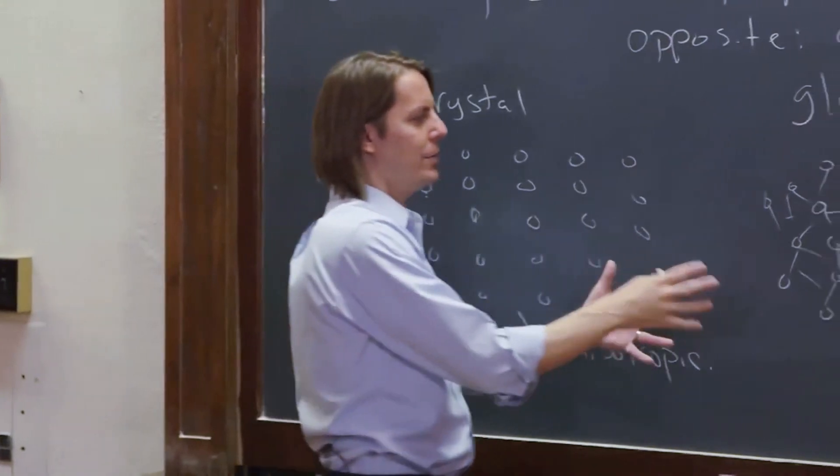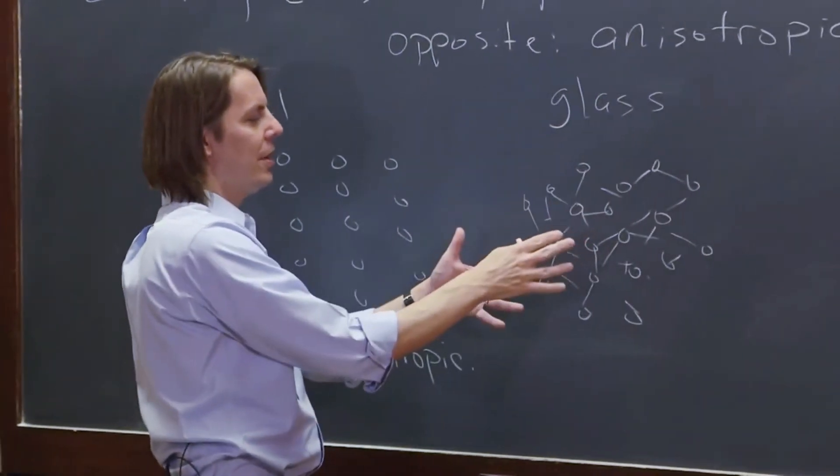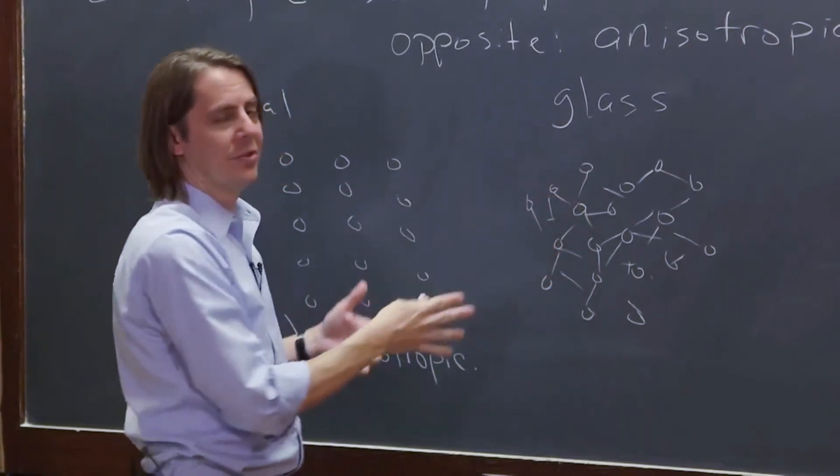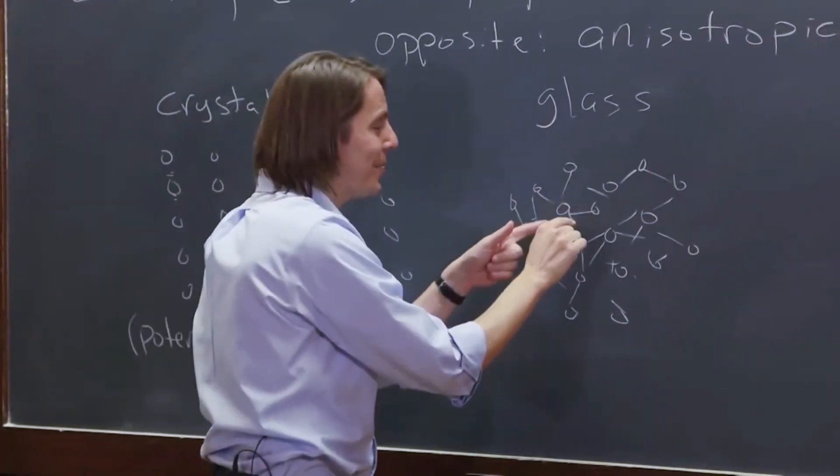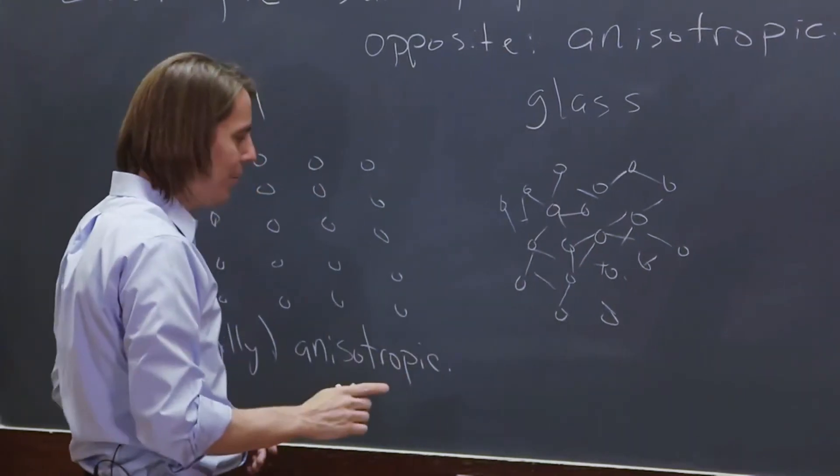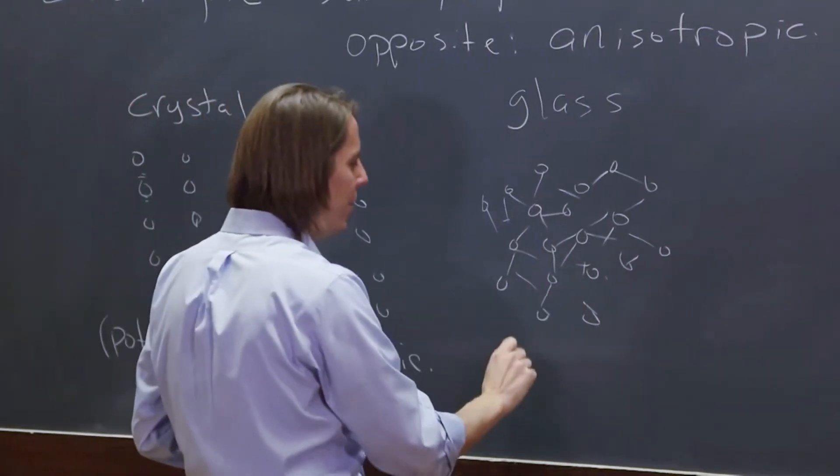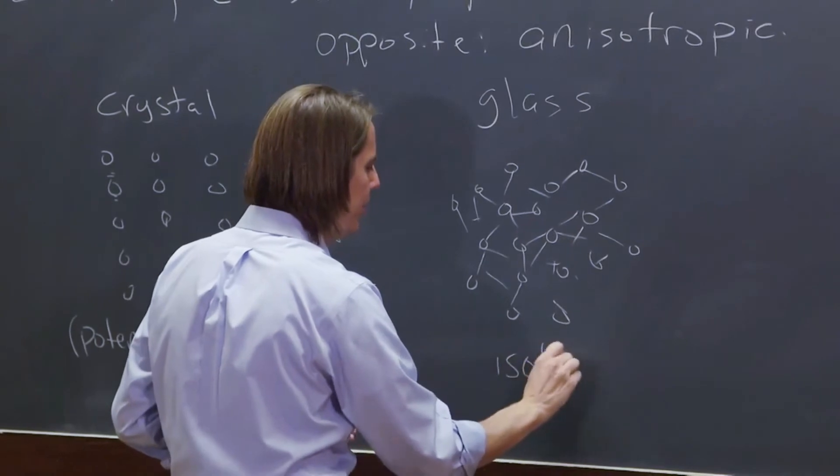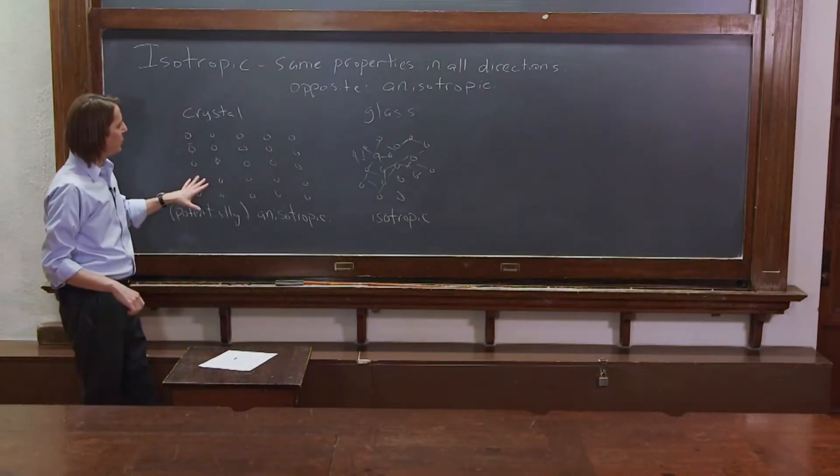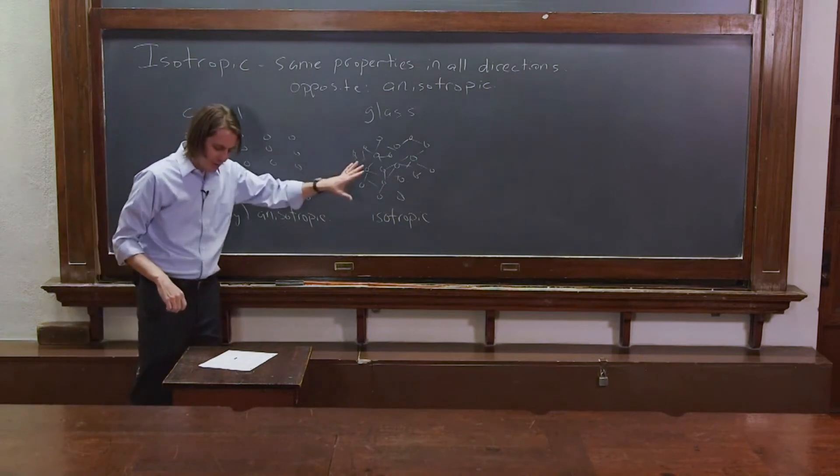So on average when the light pushes these around, pushes the charge around in this material, every direction looks pretty much the same. At the very microscopic level every one of them sees something a little different, but on average it all looks the same. So the optical properties of something like glass are isotropic. So this one anisotropic, that one isotropic.